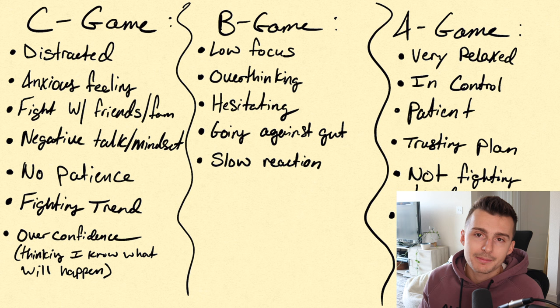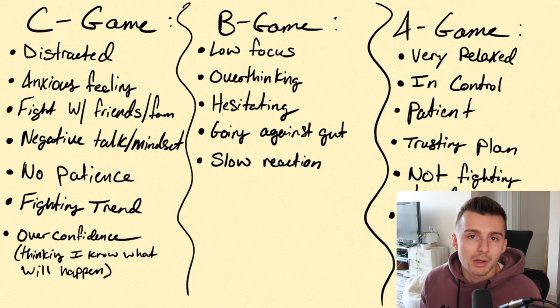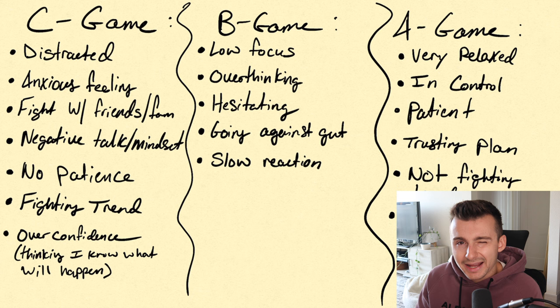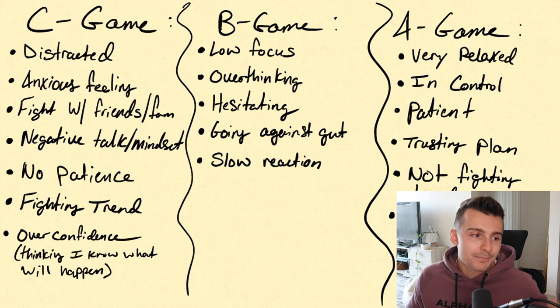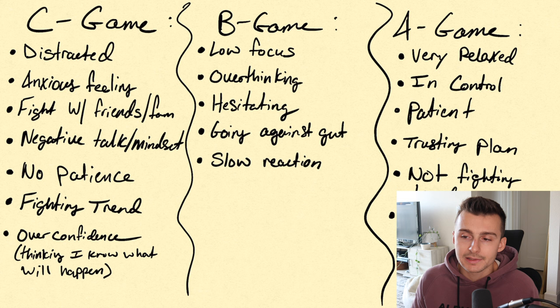When it comes to the B game, maybe I'm slightly focused but not fully dialed in — I'm watching a video over here, or my texts are going off, something that's not too distracting but just a little bit off. It could be overthinking, a slight hesitation, going against my gut, or a slow reaction — you see something you like but don't act fast enough because you hesitated. This leads to some winners, some losers. If you're more experienced, maybe you're green or break even; if less experienced, maybe slightly red, but it's not a blowup. There are still positives to take away.